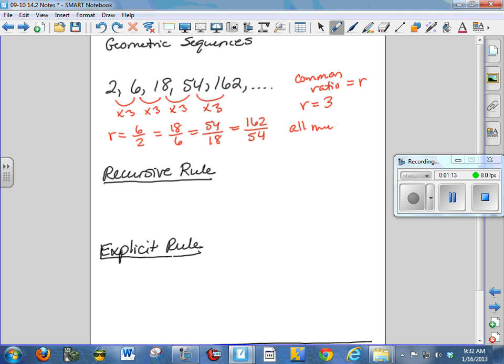All must be equal to be a geometric sequence. So if you are looking at some messier numbers, just pull out the calculator, do that little gizmo there, and you can figure out if it's a geometric sequence.